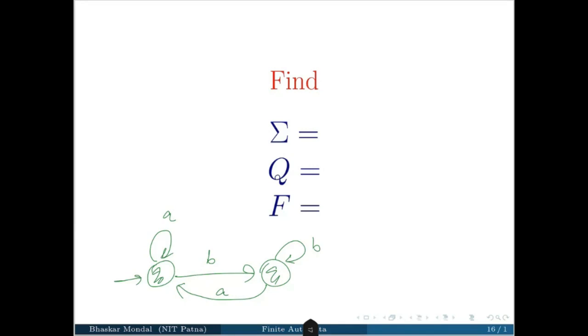What will be your sigma, or set of alphabets? A and B, good. Who answered? Q, capital Q, what will be the capital Q? Charmi answered fully, that is good. Q_0 and Q_1, and F is only Q_1, that is the final state. This is what you need to know, and you have to write every time you will design some NFA, DFA.